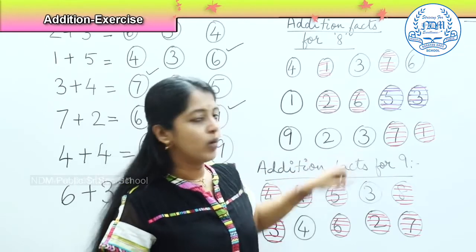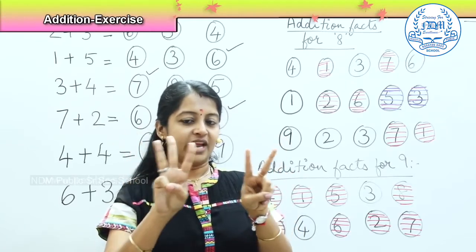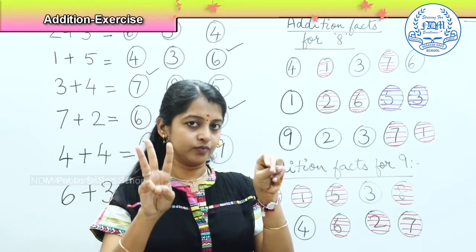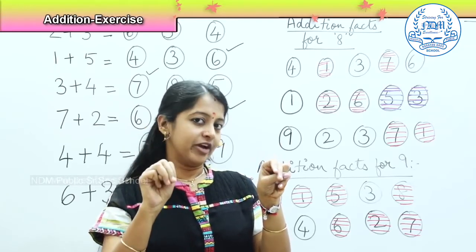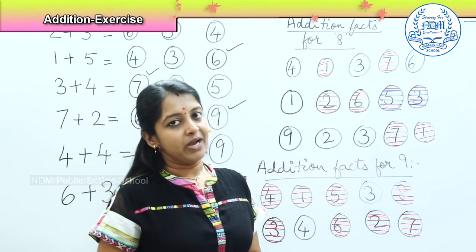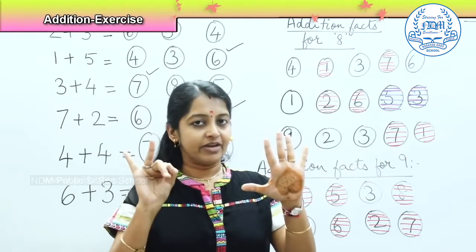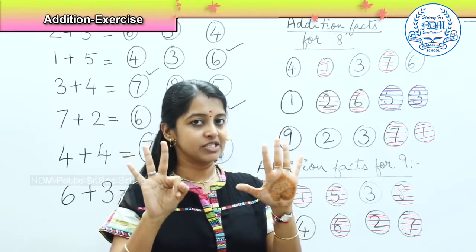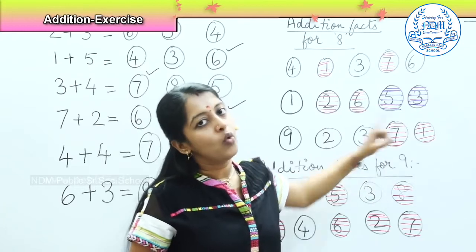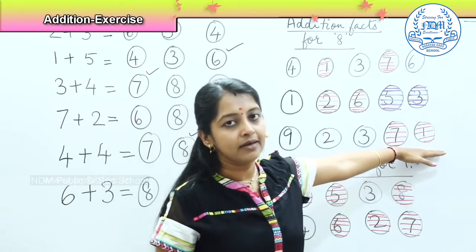If I add 2 and 3 — I keep 2 fingers and 3 fingers — the total is 1, 2, 3, 4, 5 — again this does not solve my purpose. Now if I add 7 plus 1, does it solve? Yes. So here I have only one combination, which is 7 and 1. Clear, children?